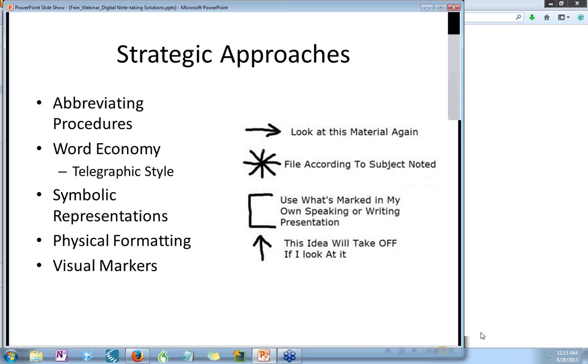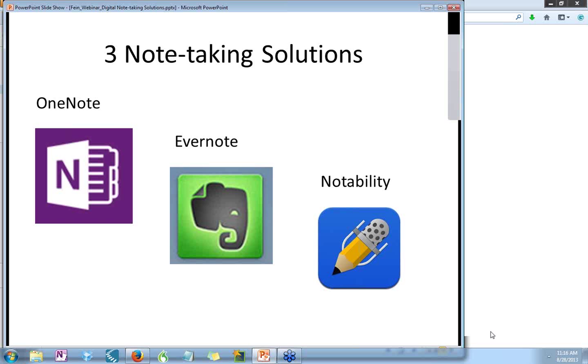Strategies include using abbreviating procedures, employing word economy through a texting style, use of symbolic representations, which we can see examples of here, physical formatting to provide organizational cues, and use of visual markers to organize notes. For example, physical lines, color, numbers, bullets, and text representations.